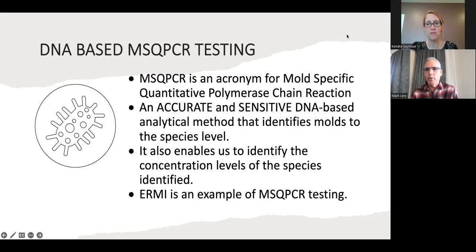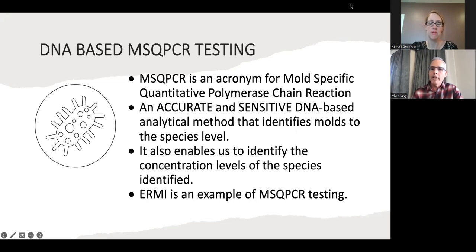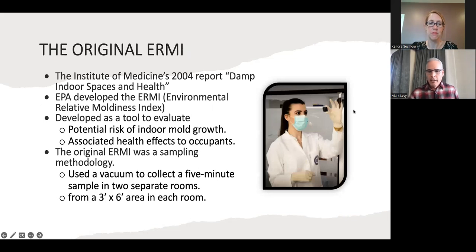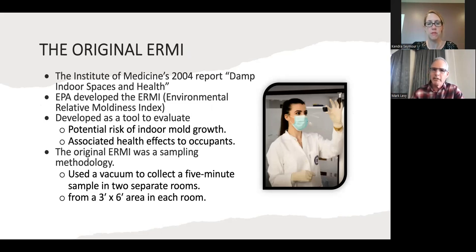MS-QPCR is an acronym for mold-specific quantitative polymerase chain reaction. It is a DNA-based type of sampling methodology, which is the most sensitive form for detection and identification of the different types of molds and species of molds. The beauty behind it is that it's DNA-based — it enables us to test down towards the species level, and it helps us with the concentration levels, which depicts the more dominant molds in the environment. ERMI is an example of MS-QPCR.